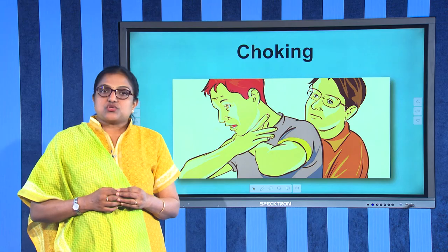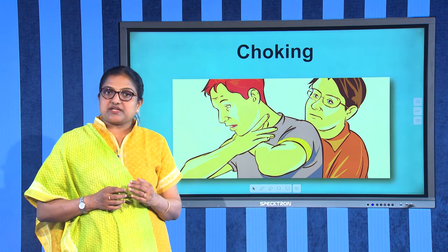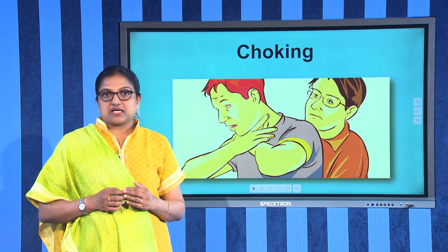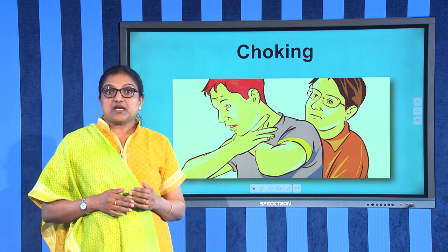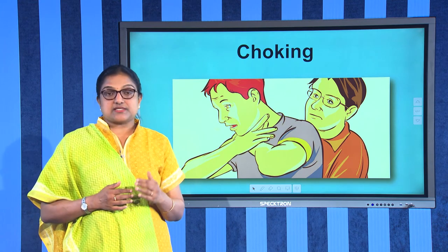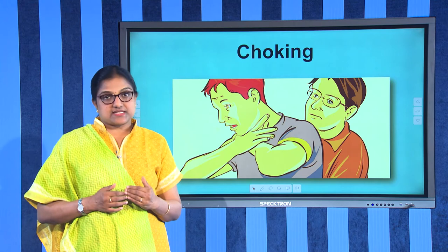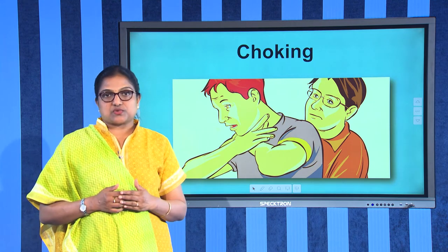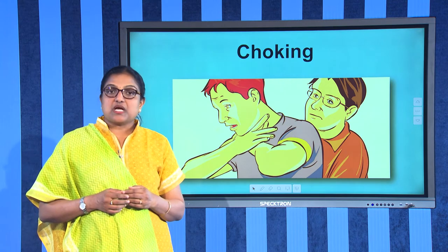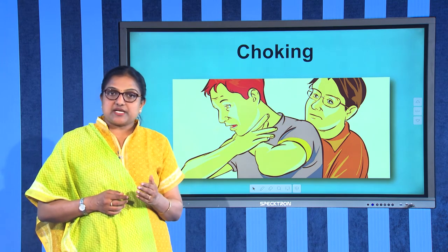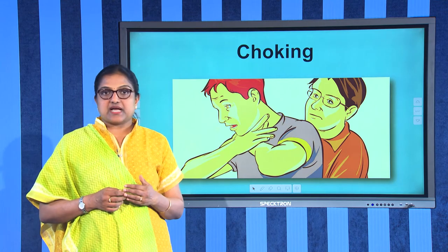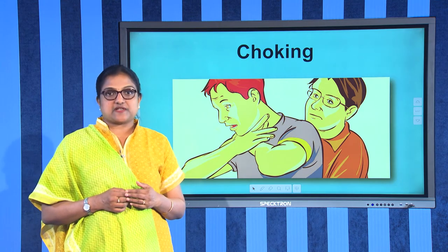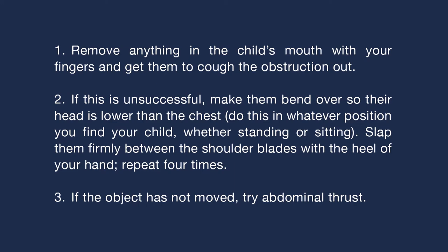Next, we shall discuss choking. Choking occurs when the airway is partially or totally blocked. It can be caused by food going down the wrong way — down the windpipe rather than the food passage. The obstruction must be removed quickly so breathing is restored. Symptoms include blueness of the face; the child will be unable to speak or breathe, and unconsciousness may develop.